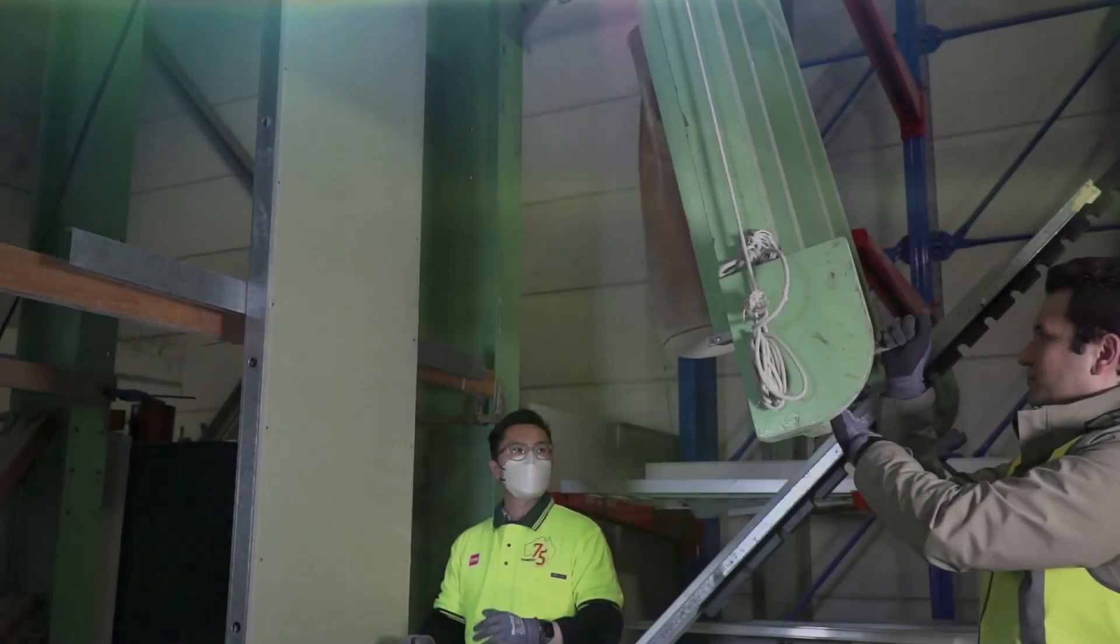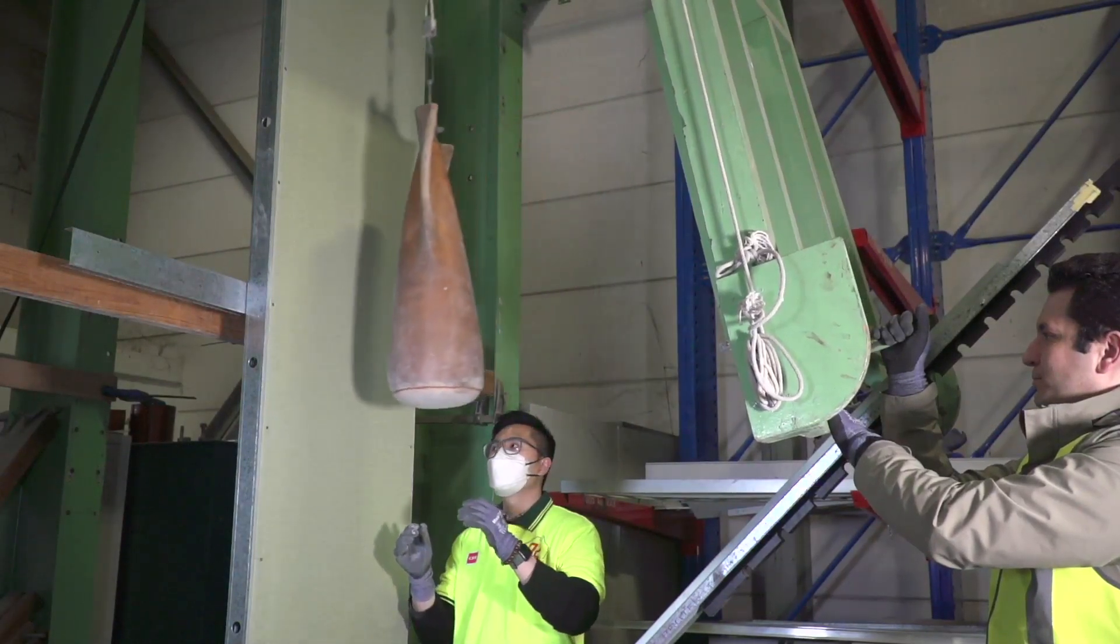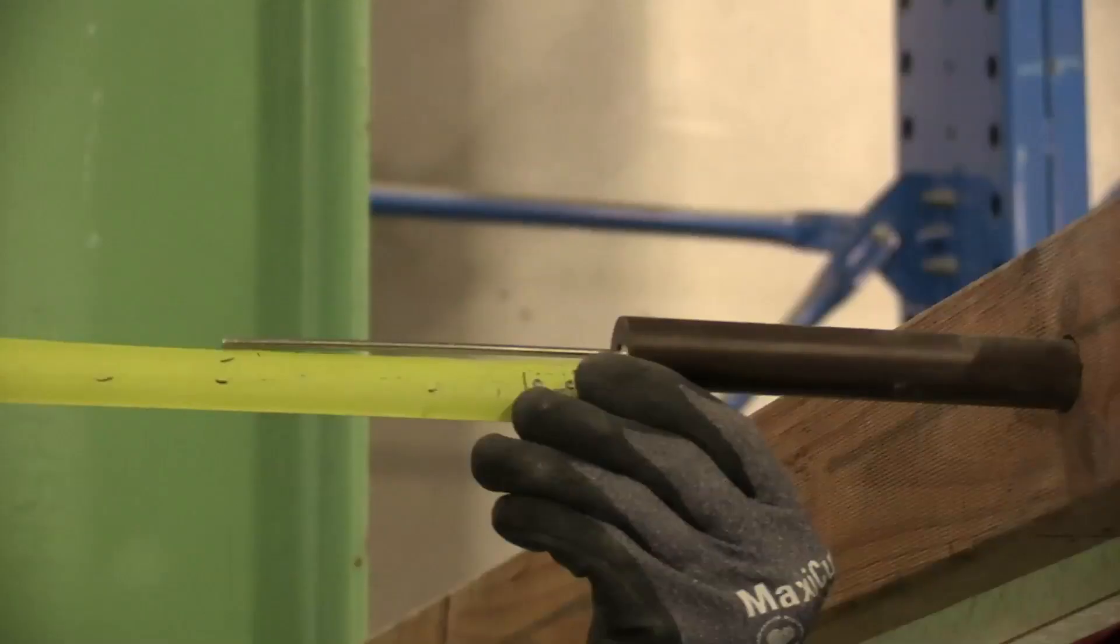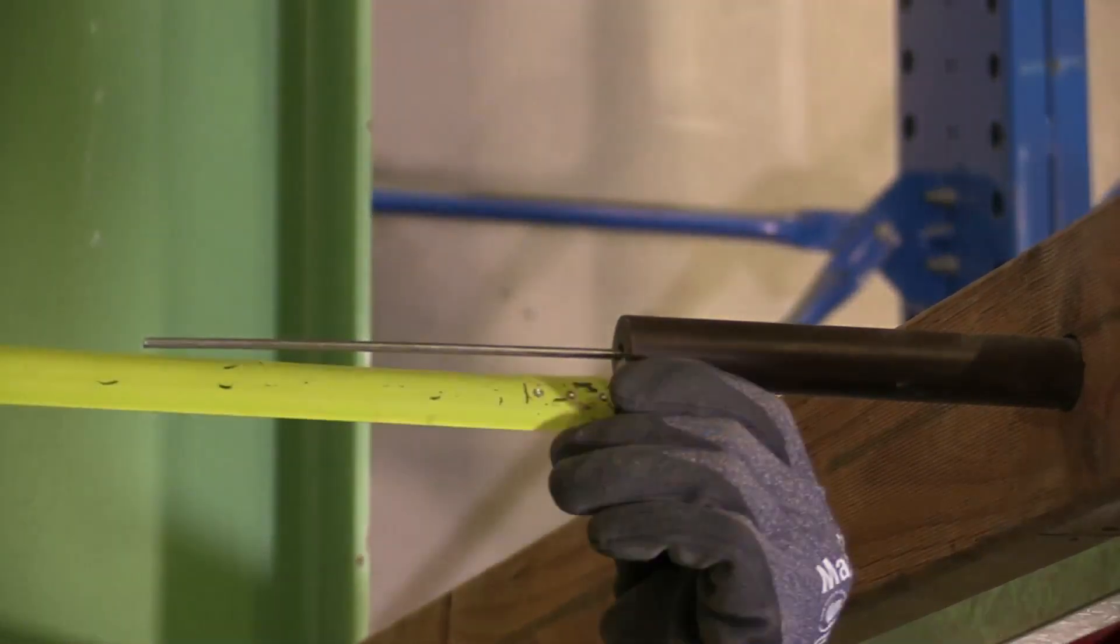In this test, a pendulum-mounted 27.2kg weighted bag is swung from a consistent height to strike wall section samples. The deflection of the wall sample is measured for comparison between samples. The lower the measure, the better the result.